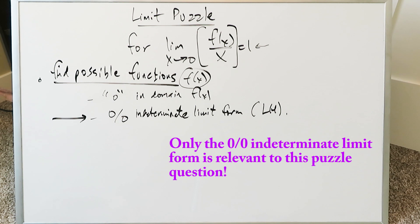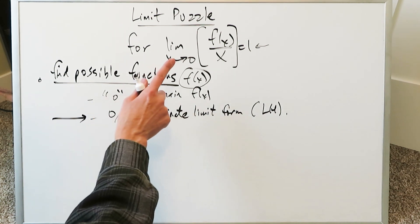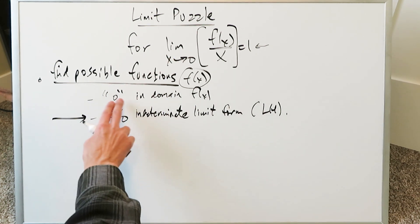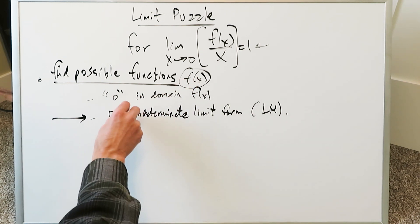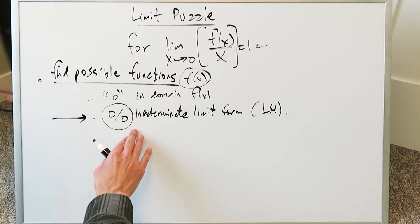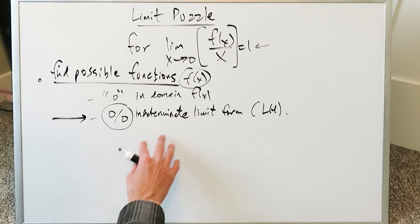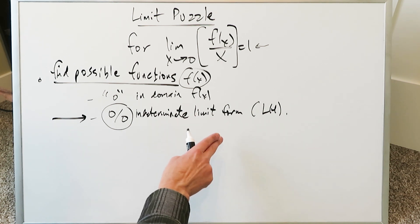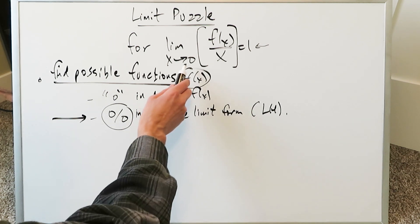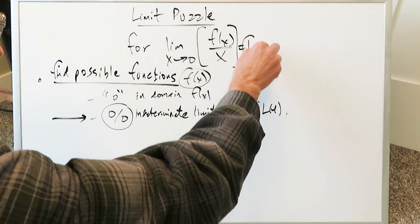This is perhaps the biggest hint: look at those functions where, when you put 0 in — because 0 is in the domain of f(x) — you end up with an indeterminate limit form. Then you do L'Hôpital's rule on the numerator and denominator using derivative procedures. At the end of those derivative procedures, when you plug in 0, you'll get the value of 1.